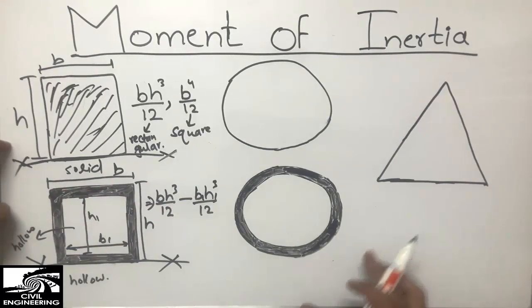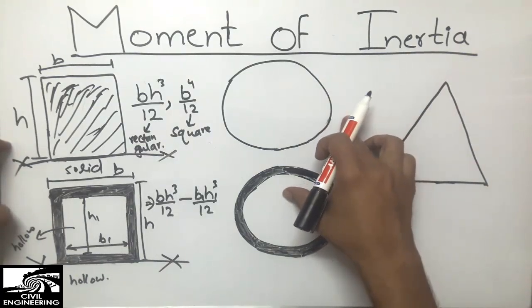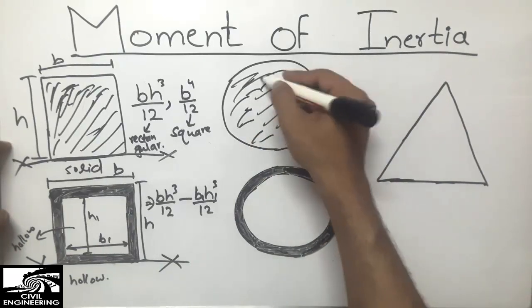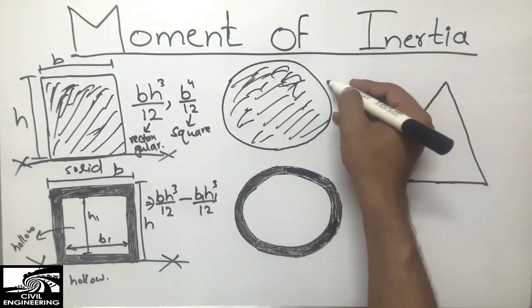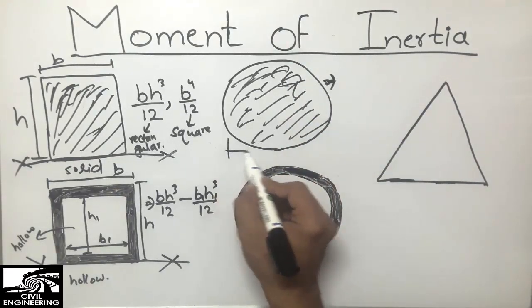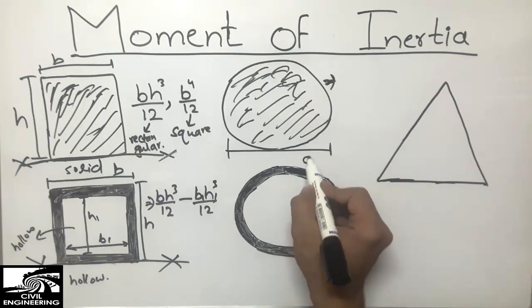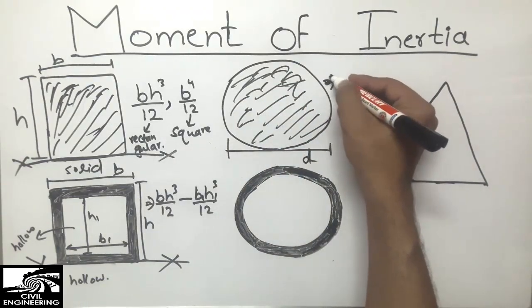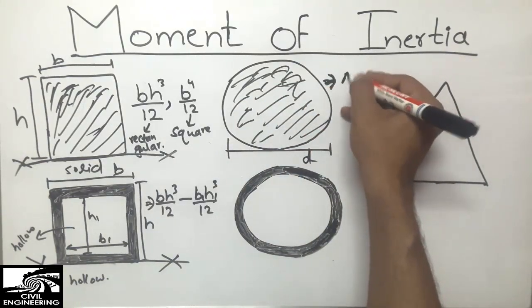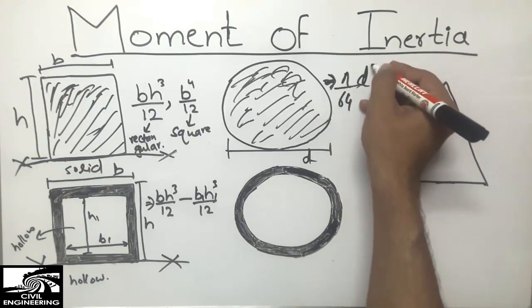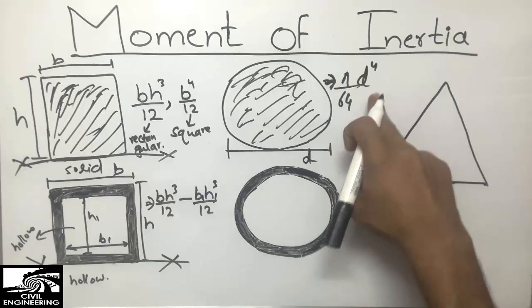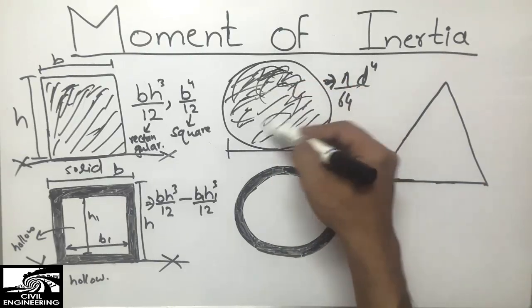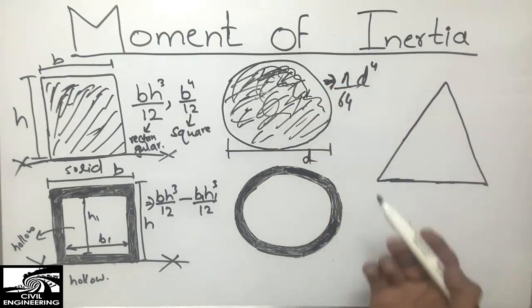Now moving on to the circular section — a whole solid circle. To find the moment of inertia of a solid circular section, if d is the diameter of the beam, we use the formula pi divided by 64, multiplied by d to the power of 4. So I = πd⁴/64 gives the moment of inertia of the solid circular section.